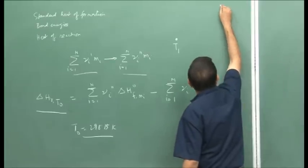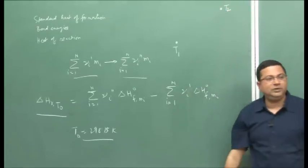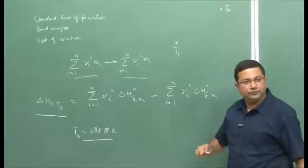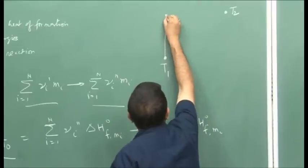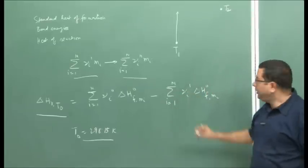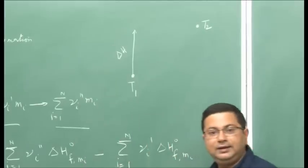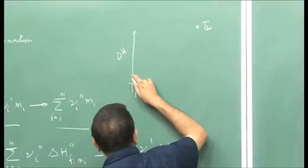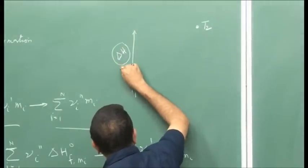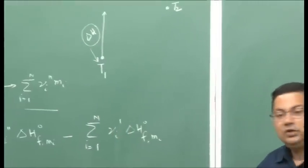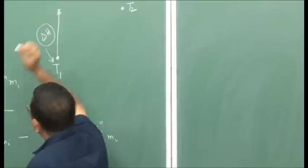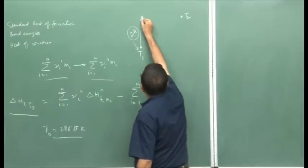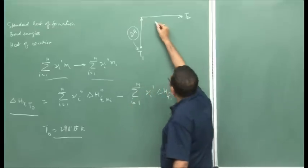We can take two paths to reach from T1 to T2. In path A, we first supply some ΔH amount of heat to the reactants at temperature T1, which heats them to temperature T2. After that, we carry out the isothermal reaction at temperature T2.